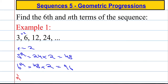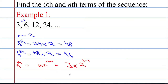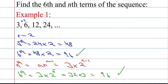How about the nth term? The nth term equals a, the first term, multiplied by r to the power of n minus 1 — so 3 times 2 to the power of n minus 1. Let's check that this works by finding the sixth term again: 3 multiplied by 2 to the power of 5. 2 to the power of 5 is 32, and 32 times 3 is indeed 96. So it works.